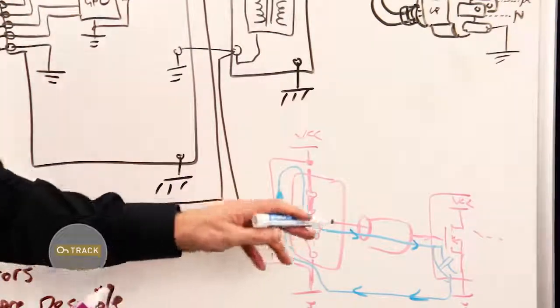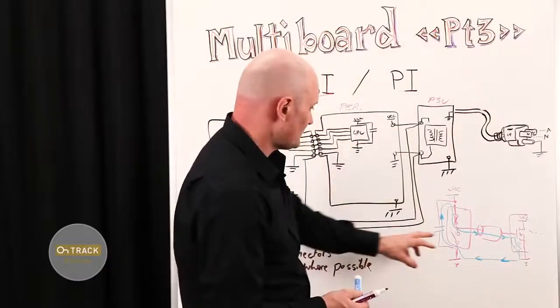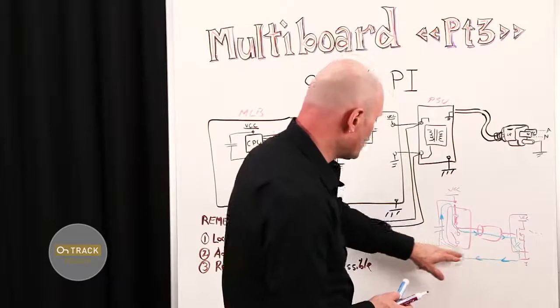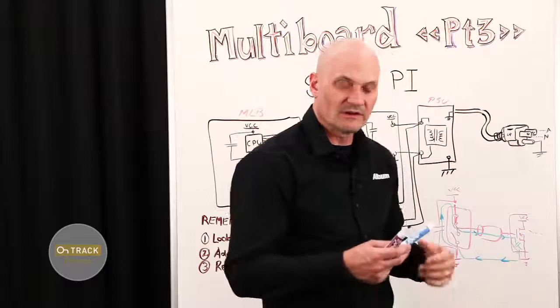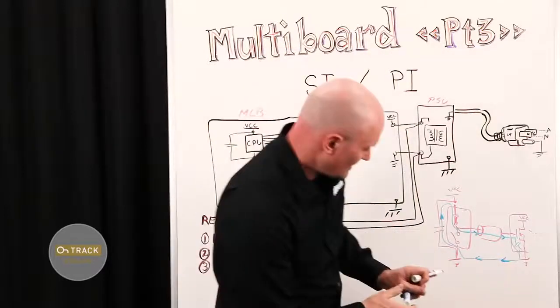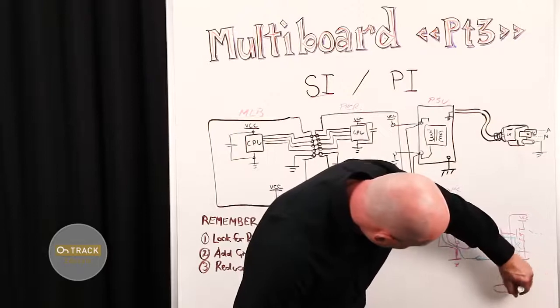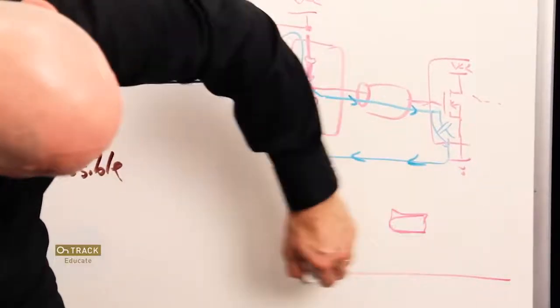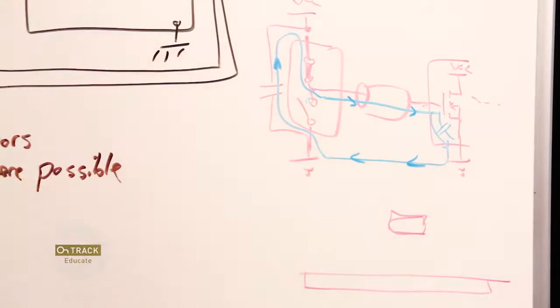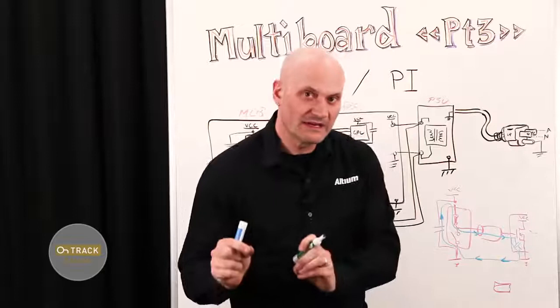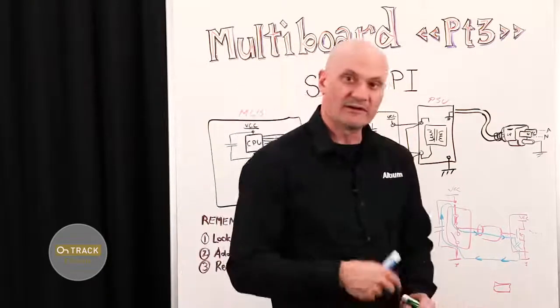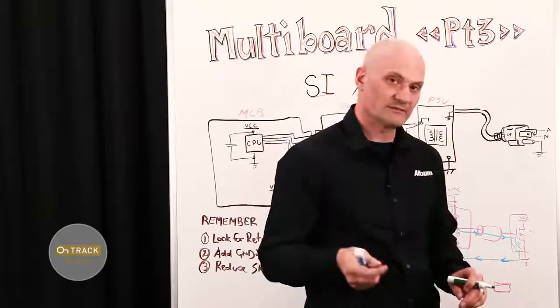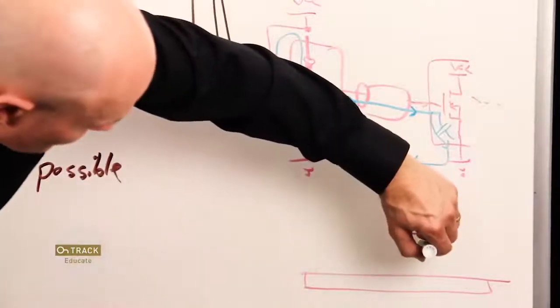Now at high speed signal edge rates, the return path current wants to flow as closely as possible to the outbound side of that loop. Why? Because in the scenario of, we have a, for example, a PCB trace and a ground plane, it wants to follow the path of least impedance, just like water follows the path of least resistance.